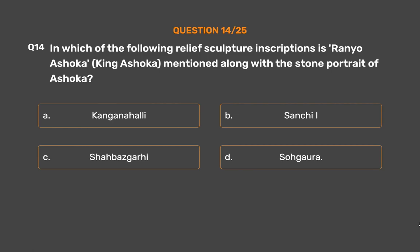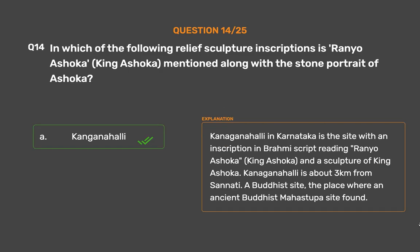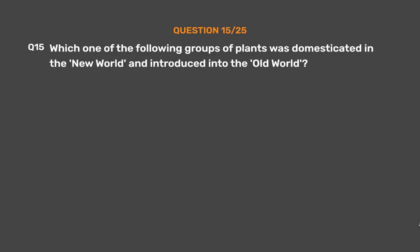The correct answer is Option A: Kanganahali. Kanganahali in Karnataka is a site with an inscription in Brahmi script reading 'Ranyo Ashoka' (King Ashoka) and a sculpture of King Ashoka. Kanganahali is about 3 km from Sanati, a Buddhist site where an ancient Buddhist Mahastupa was found.